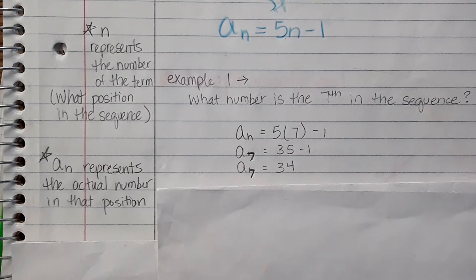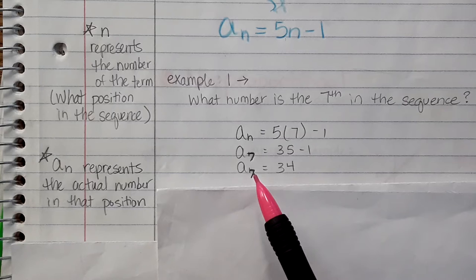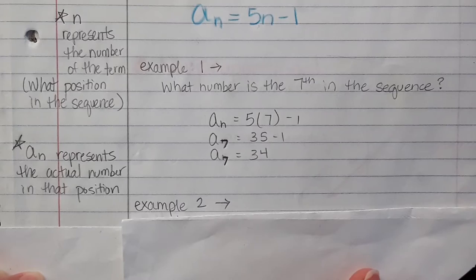A sub n is the number in that position, so a sub 7 tells me the 7th number in the sequence is 34.